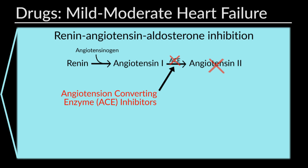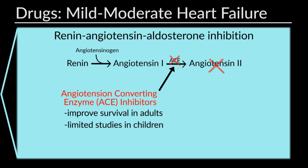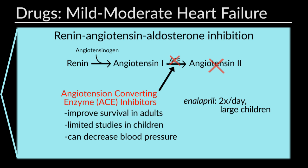ACE inhibitors inhibit formation of angiotensin-2, a potent vasoconstrictor that promotes myocyte hypertrophy and fibrosis. ACE inhibitors improve survival in adults and reduce the rate of heart failure progression. Experts suggest their use in children with pump dysfunction — stage B or C — may be of benefit, but close monitoring of blood pressure and renal function is imperative. Enalapril with twice daily dosing is traditionally used for larger children, and captopril with three times daily dosing is used for smaller infants and children.